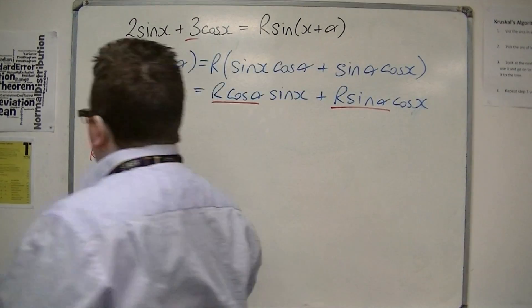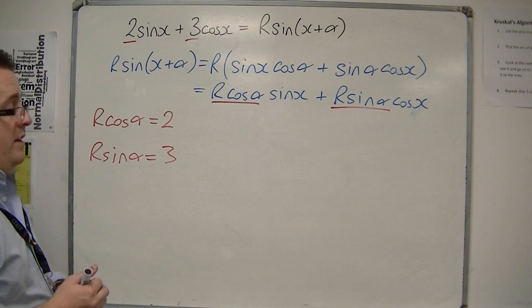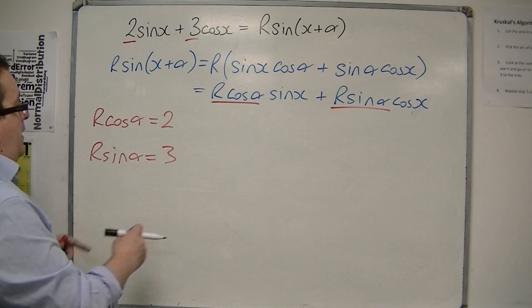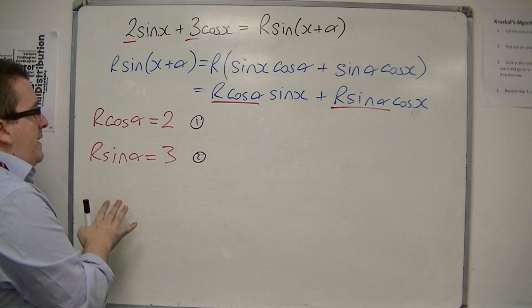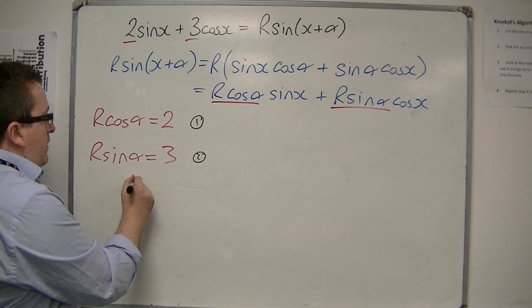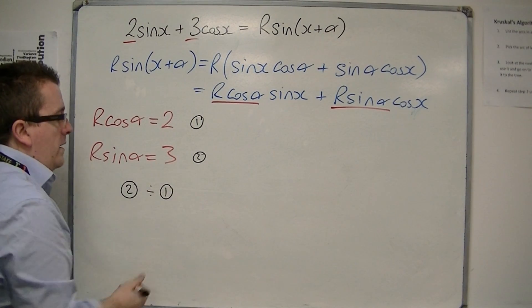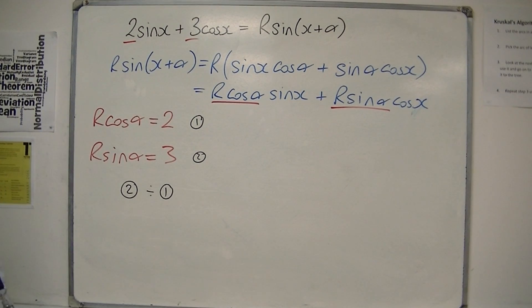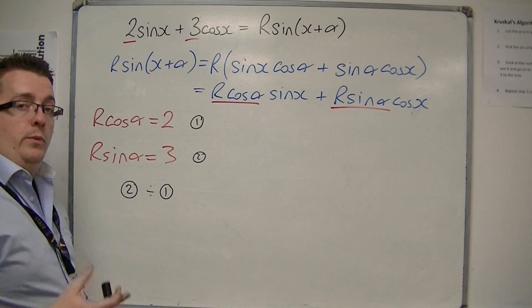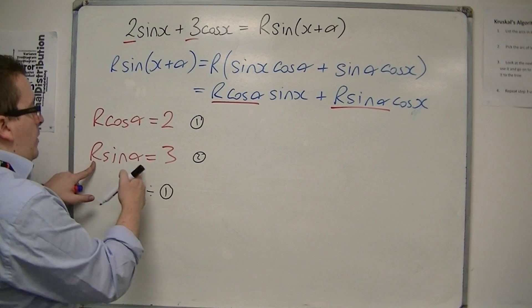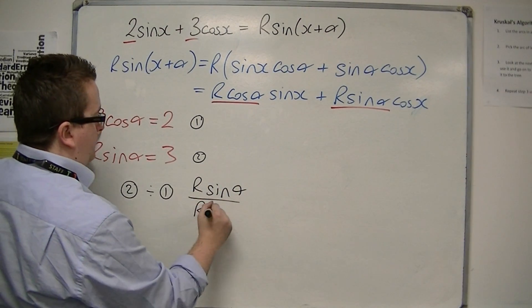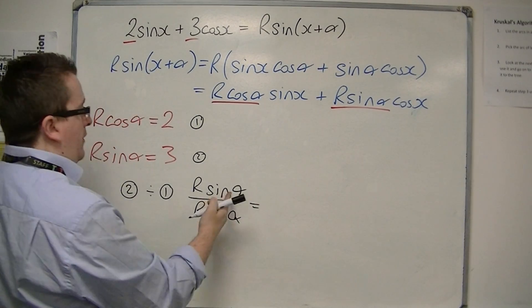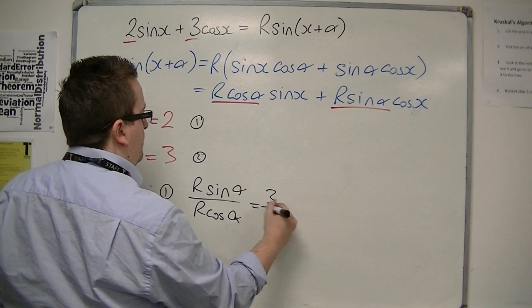Now, it doesn't really matter which one you go for first. I'm going to go for α first. So let's call this equation 1 and equation 2. And I can find α by eliminating the r's by doing equation 2 divided by equation 1, much like we would have done for geometric sequences in core 2. So we've got equation 2 over equation 1. So we've also got the r sin α over r cos α is 3 over 2.